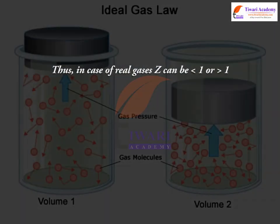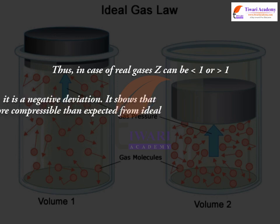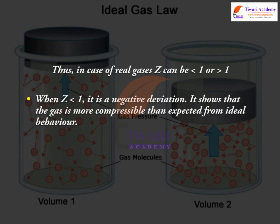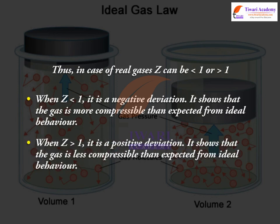Thus, in case of real gases, Z can be less than 1 or greater than 1. When Z is less than 1, it is a negative deviation — it shows that the gas is more compressible than expected from ideal behavior. When Z is greater than 1, it is a positive deviation — it shows that the gas is less compressible than expected from ideal behavior.